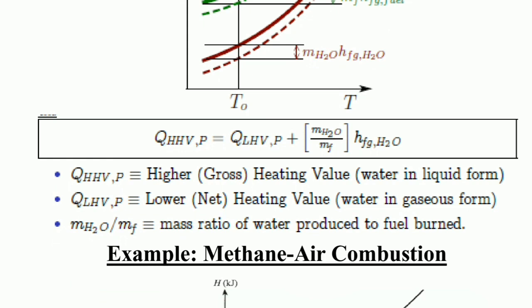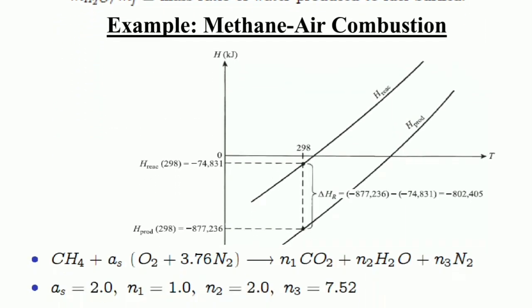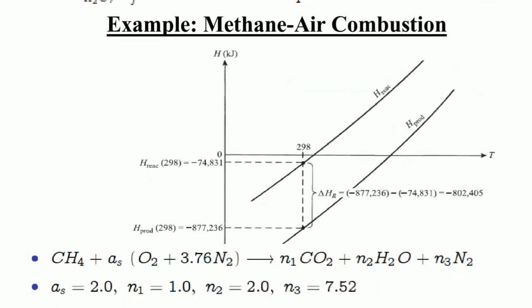The ratio mH₂O/mf equals the mass ratio of water produced to fuel burnt, and there is an equation in the box. Another example is methane-air combustion.